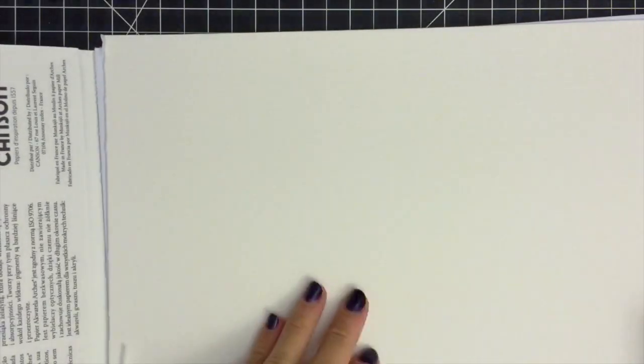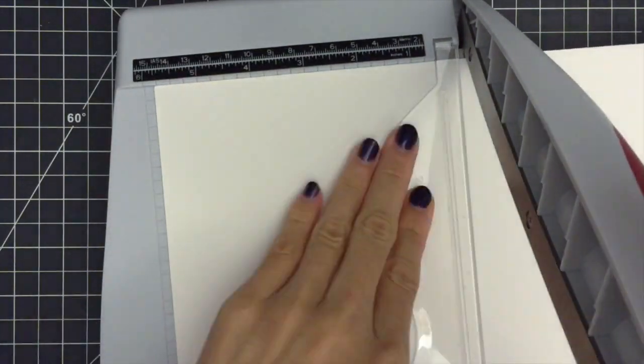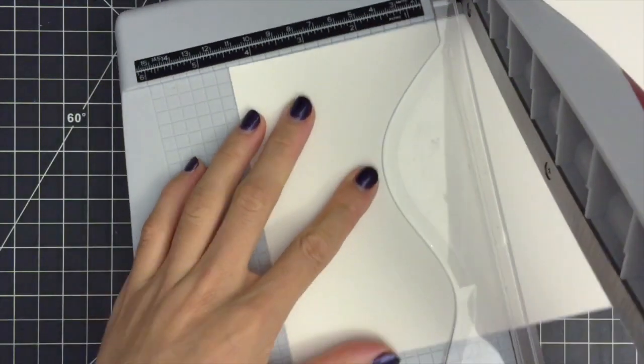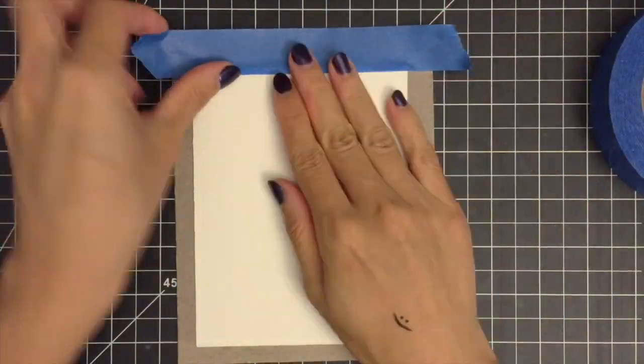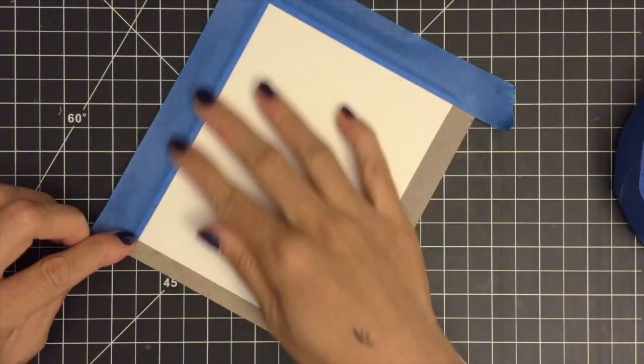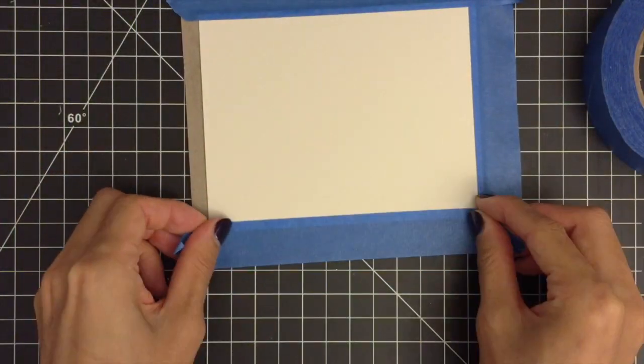I'm starting out by cutting down my Arches cold-pressed watercolor paper into slightly larger than standard A2 card size using Timur's paper trimmer. I'm taping down my watercolor paper onto the chipboard paper using painter's tape. This will keep my paper from warping as I watercolor.